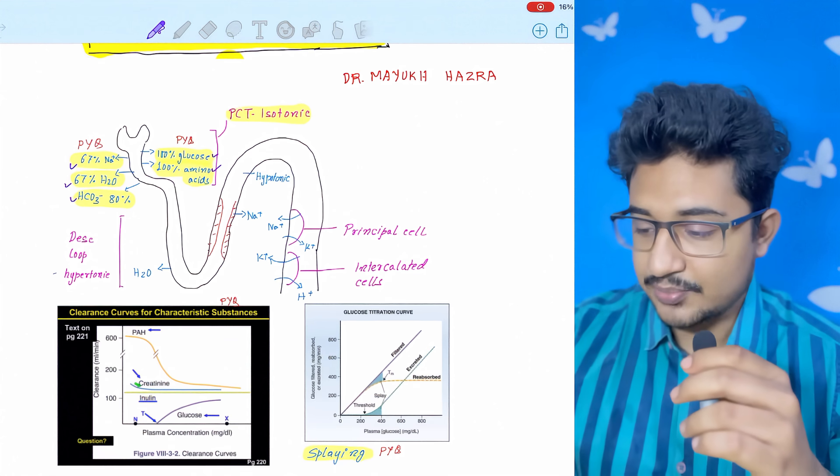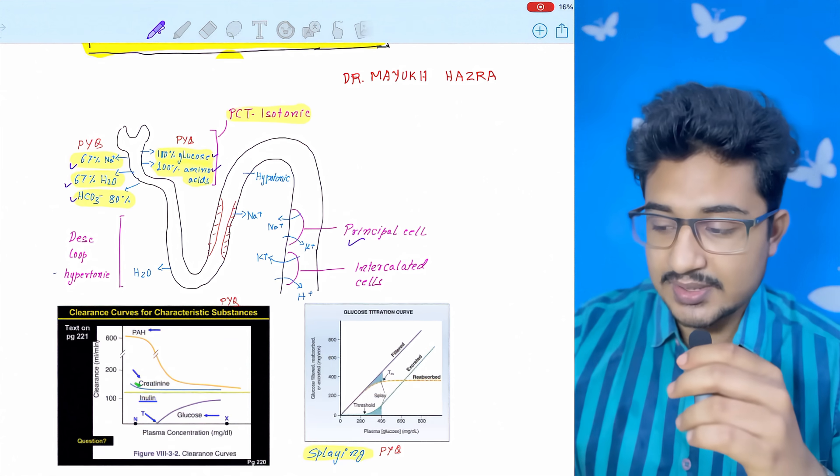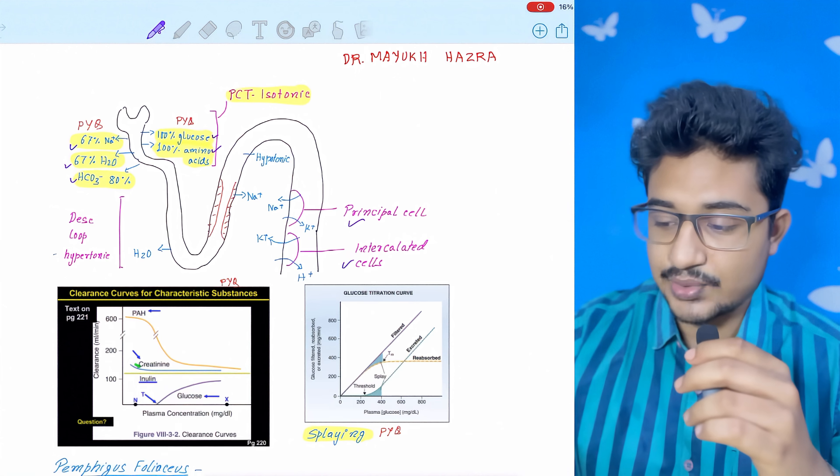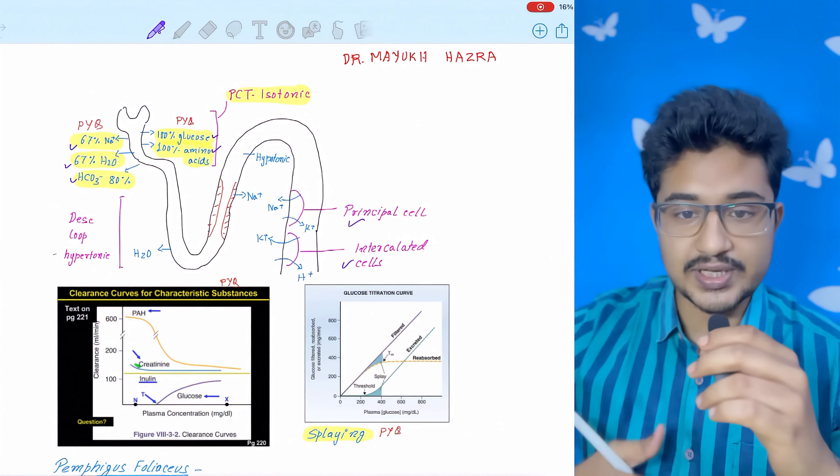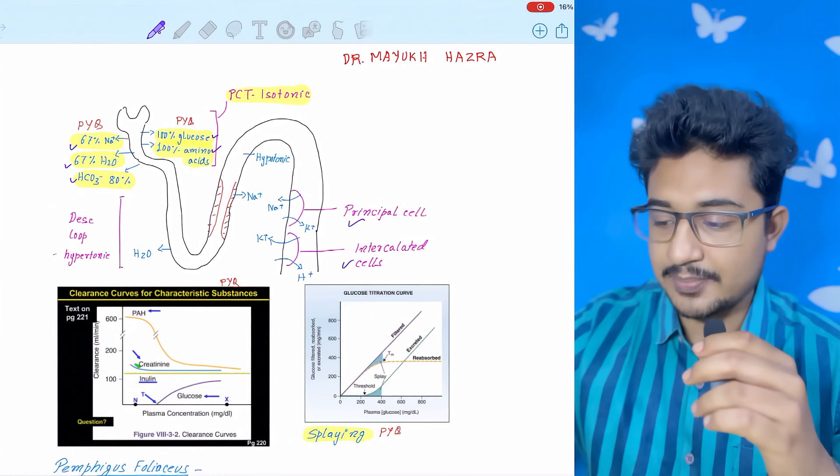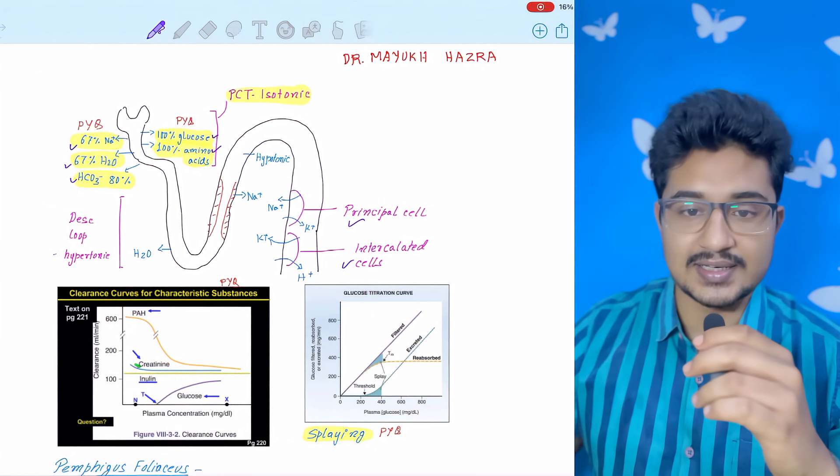Another important concept is the principal cell and the intercalated cell. Principal cells absorb sodium and excrete potassium, while potassium is reabsorbed and hydrogen is secreted by the intercalated cells.